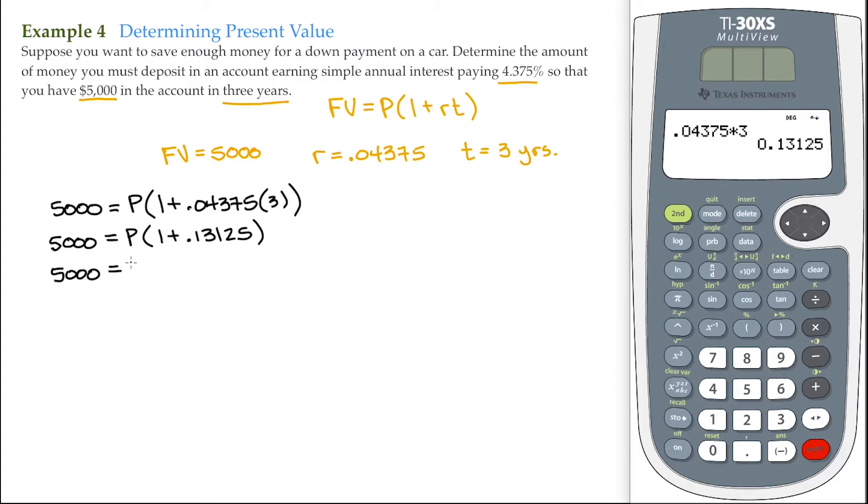This is $5,000 equals P. 1 plus 0.13125 is 1.13125.